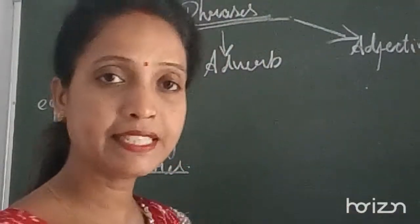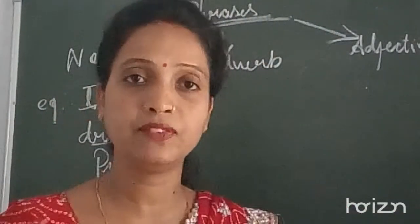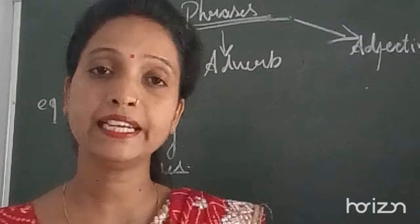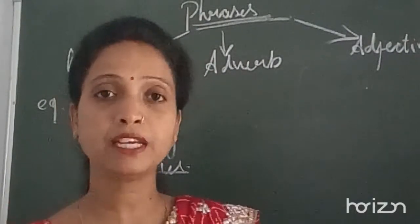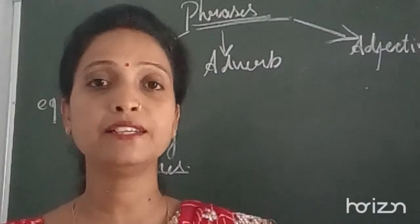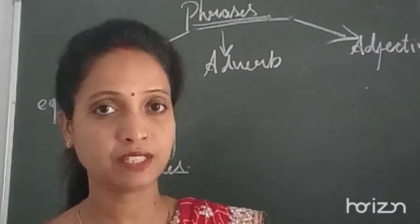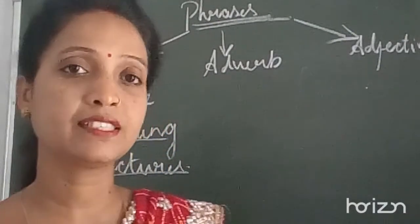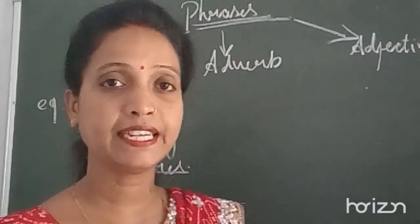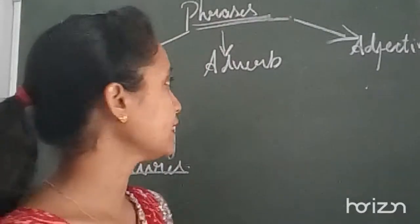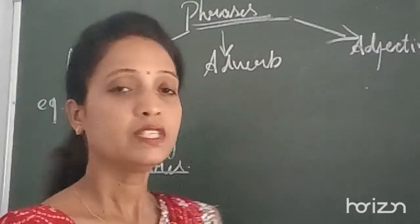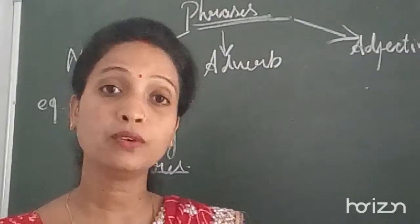Now let us move to the second type — that is the adverb phrase. Adverb phrase woh hota hai jo sentence mein verb ke baare mein koi extra information de raha hai — which is telling you about the verb and the action in the sentence. For example: he entered the room quietly.